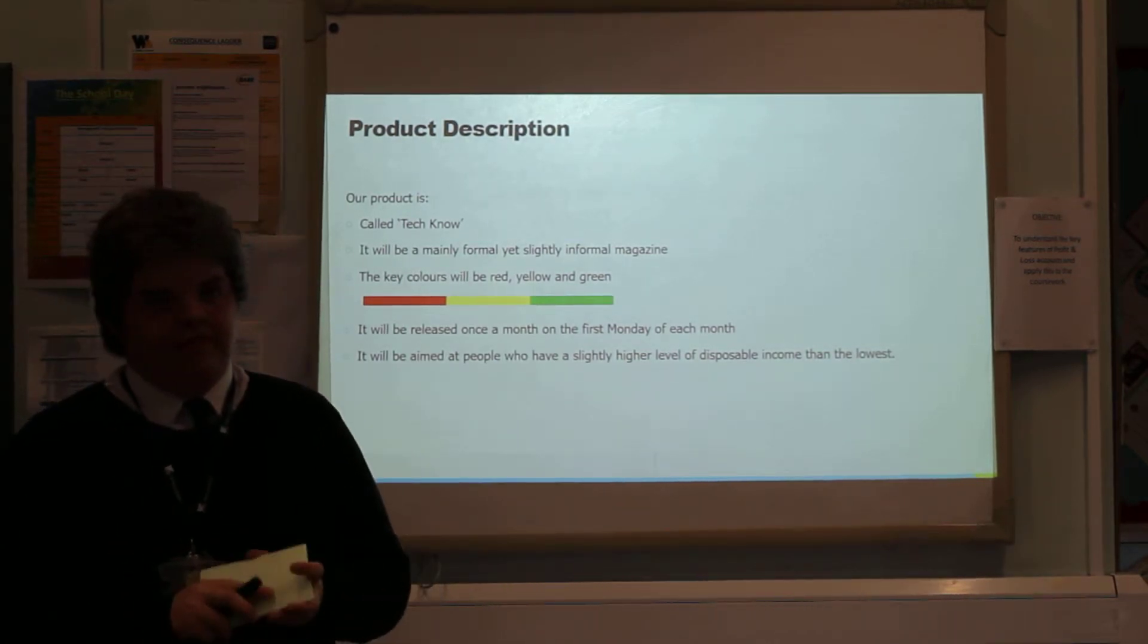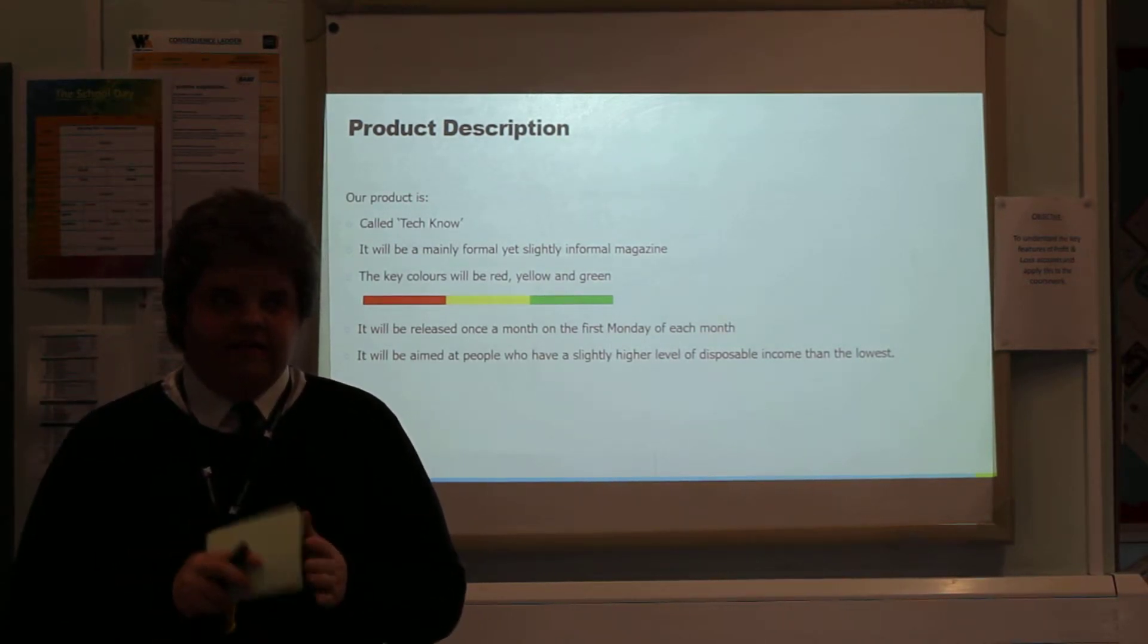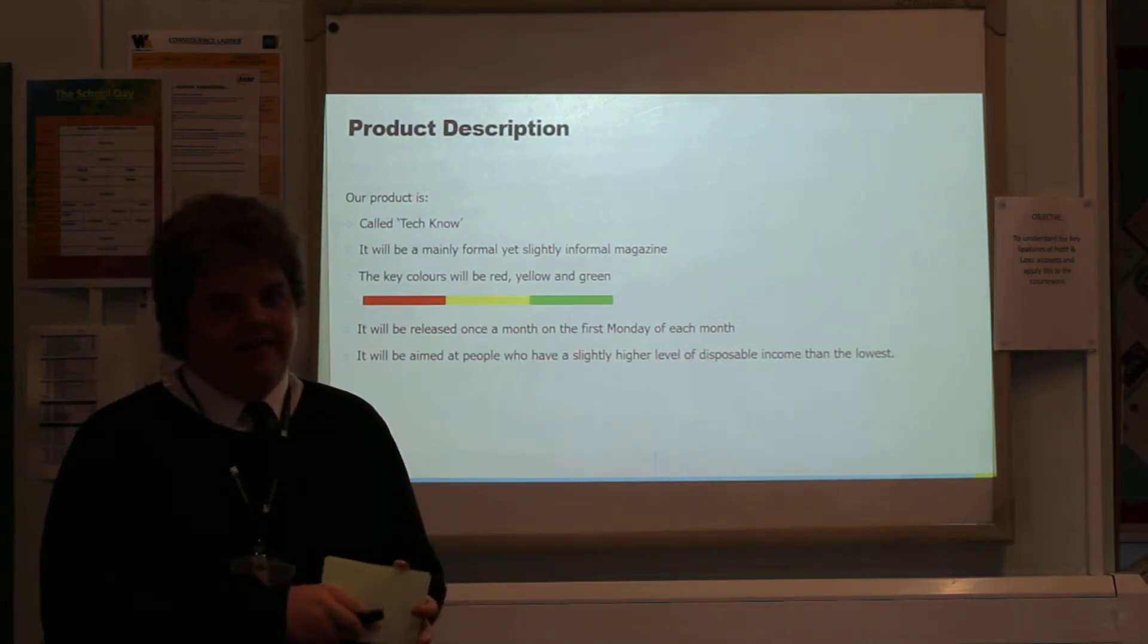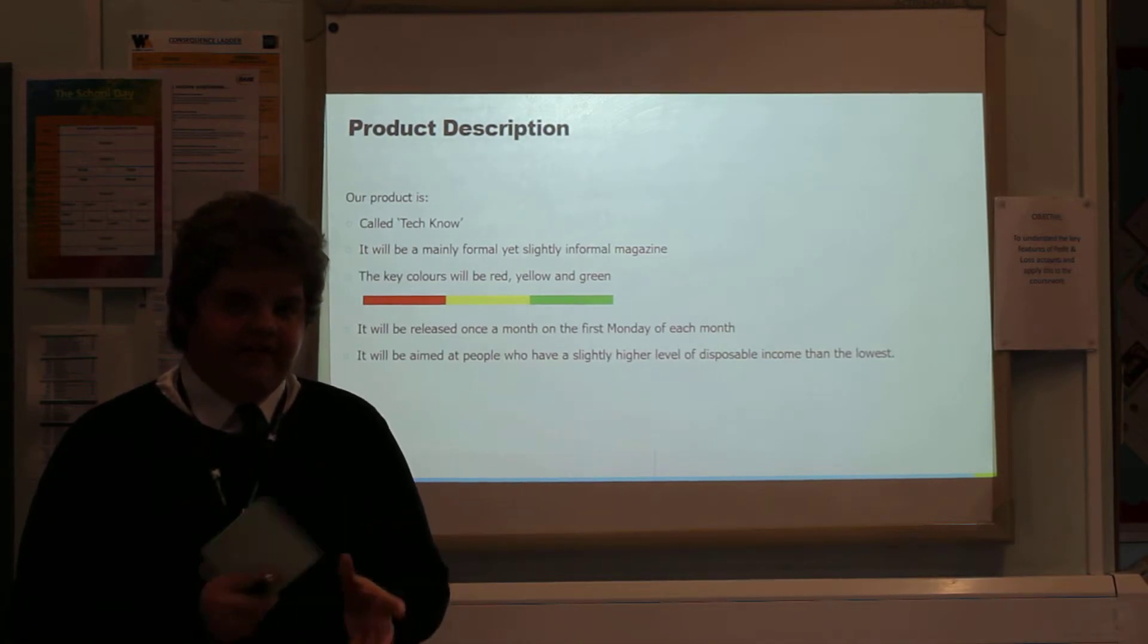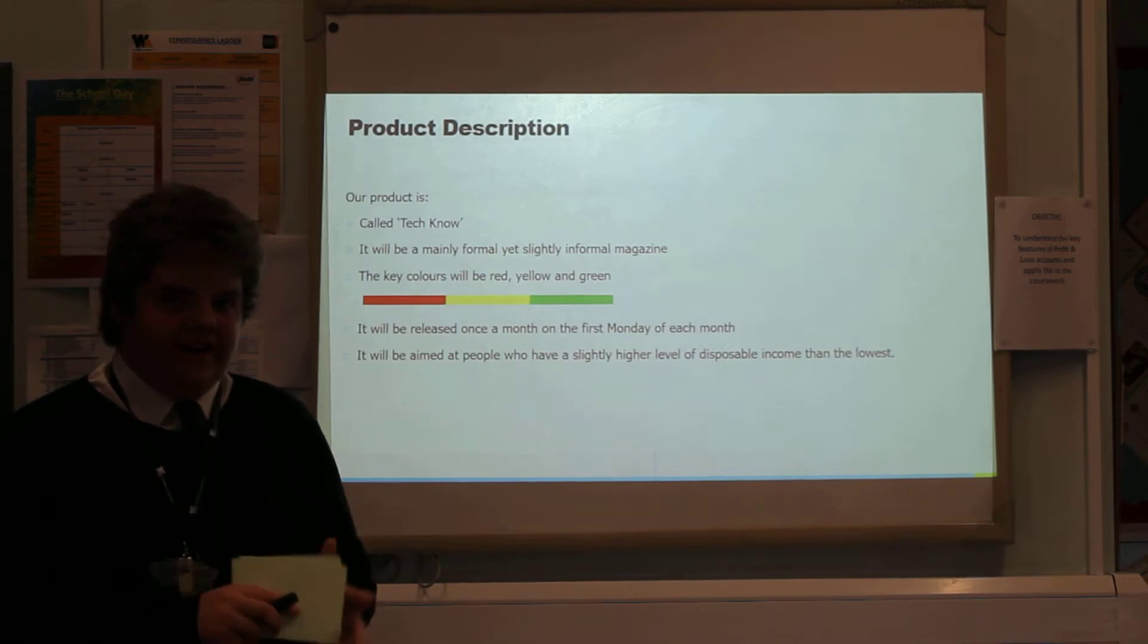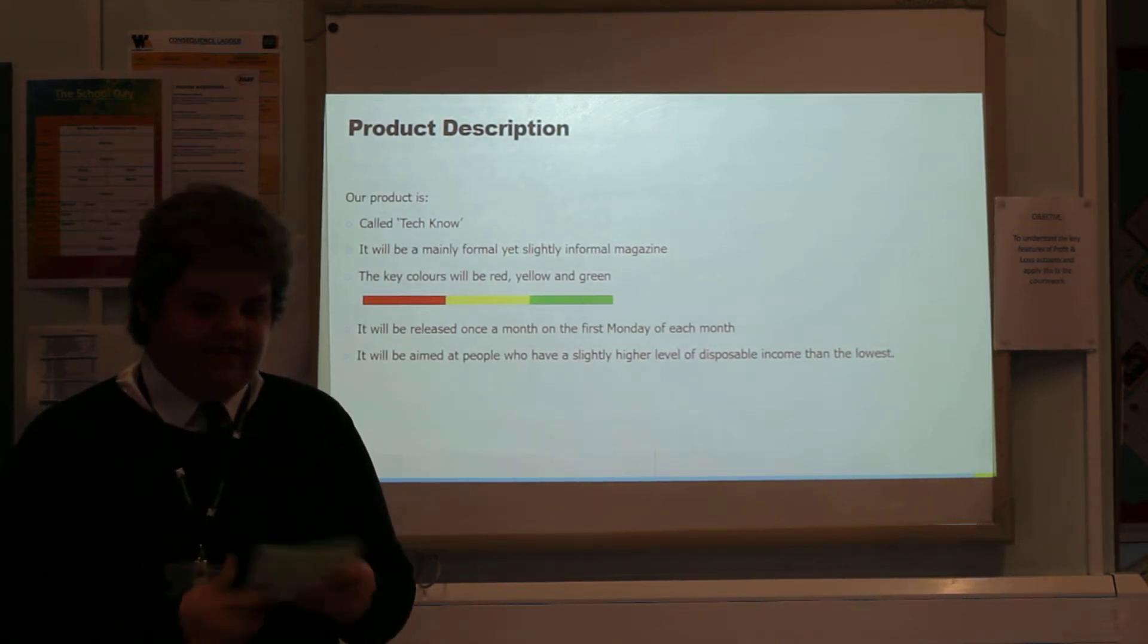Earlier on I mentioned the competitions we want to run. The types of competitions we want to run are where you can use a code which will be hidden within our magazine, but only so many people can use the code before it runs out. This is why it works to make it digital, which makes it fairer, so you don't get anybody sneaking looks at codes before they're released.